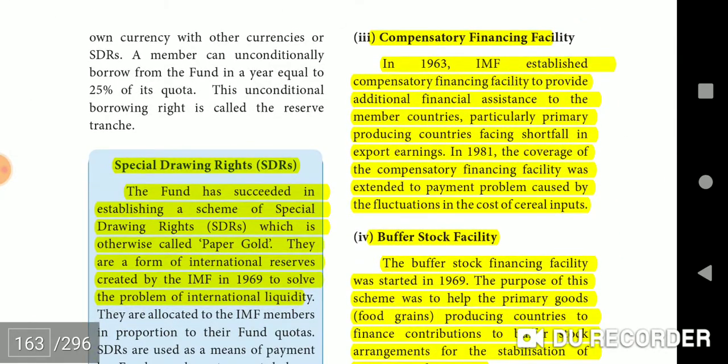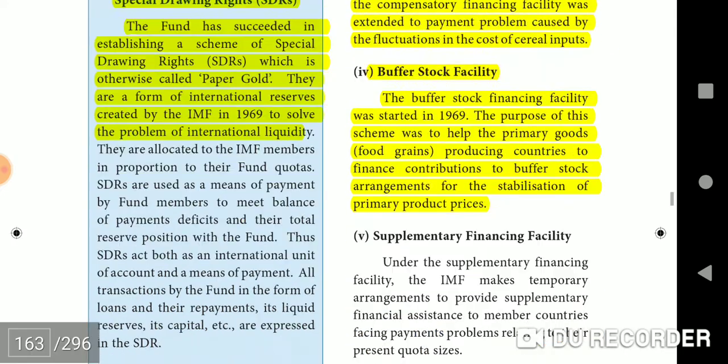Special Drawing Rights (SDRs): The IMF successfully established a scheme of Special Drawing Rights, otherwise called paper gold. They are a form of international reserves created by the IMF in 1969 to solve the problem of international liquidity.